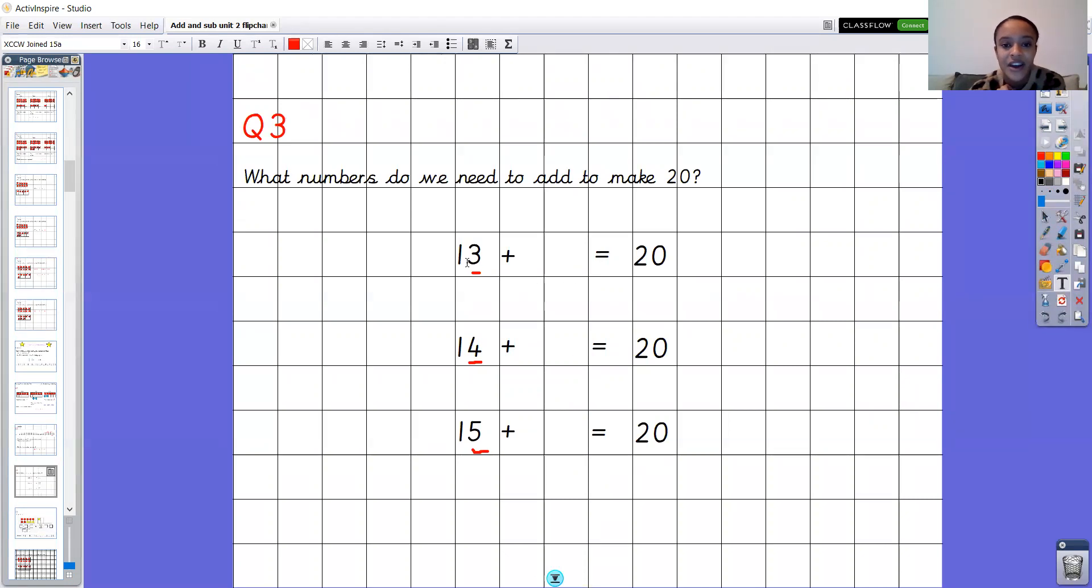Fantastic. Okay so 13 is one ten and three ones, and we've got three ones and we'd like to get to ten. What do we add? We add seven. So when we've got one ten and three ones we add seven to get to 20. Fantastic. If we've got four ones we want to get to 10. What do we add? We add six. So if we've got one ten and four ones we add six to get to 20.